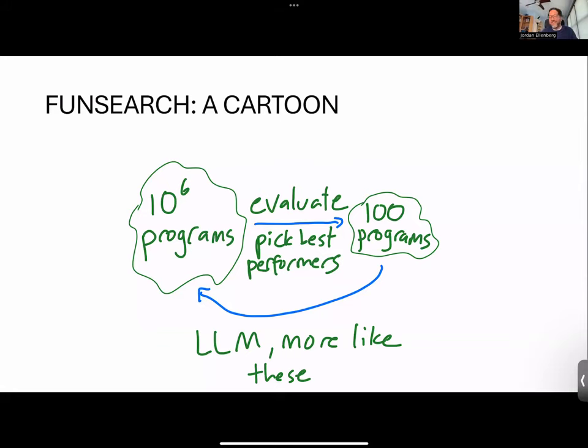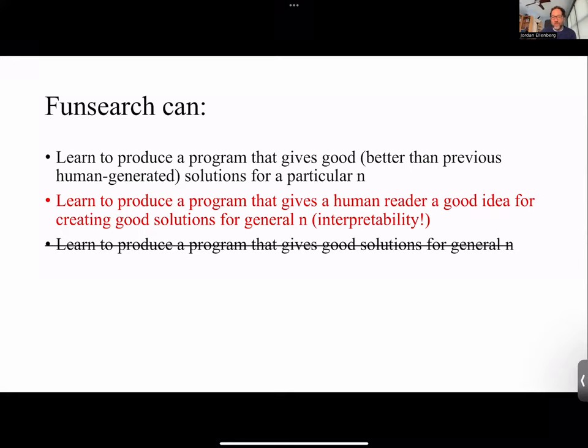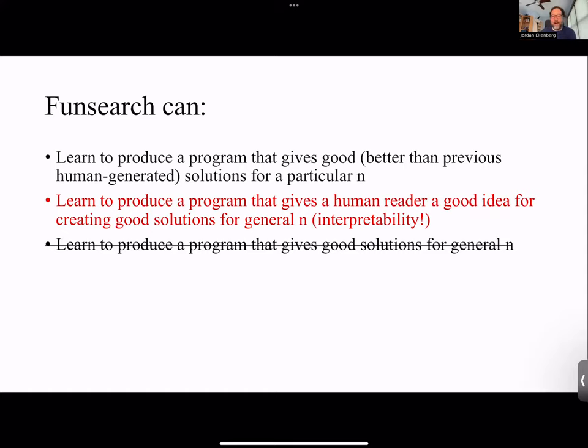Did that happen with this problem? No — if I had a qualitatively new lower bound for cap sets, I would be giving that talk. But here's how far we got: I'm somebody who's thought about this problem a lot, and it certainly happened several times that I would think through what the code was doing and be like — okay, actually, now that I see the strategy, that gives me a thought for something to try. None of those things worked, but I feel like an idea that seems interesting enough for somebody who's worked on the problem to spend three days to a week thinking through — that's already pretty good.